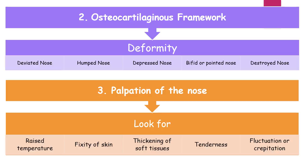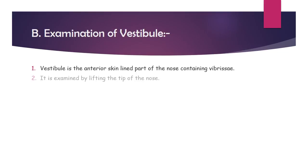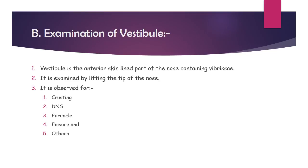Point number 2: examination of the vestibule of the nose. What is the vestibule? The vestibule is the anterior skin-lined part of the nose containing the vibrissae. It is examined by lifting the tip of the nose and tilting the head of the patient backwards. It is observed for crusting, deviated nasal septum (DNS), furunculo-fissure, and others — including inflammation, rhinosporidiosis, and carcinoma.